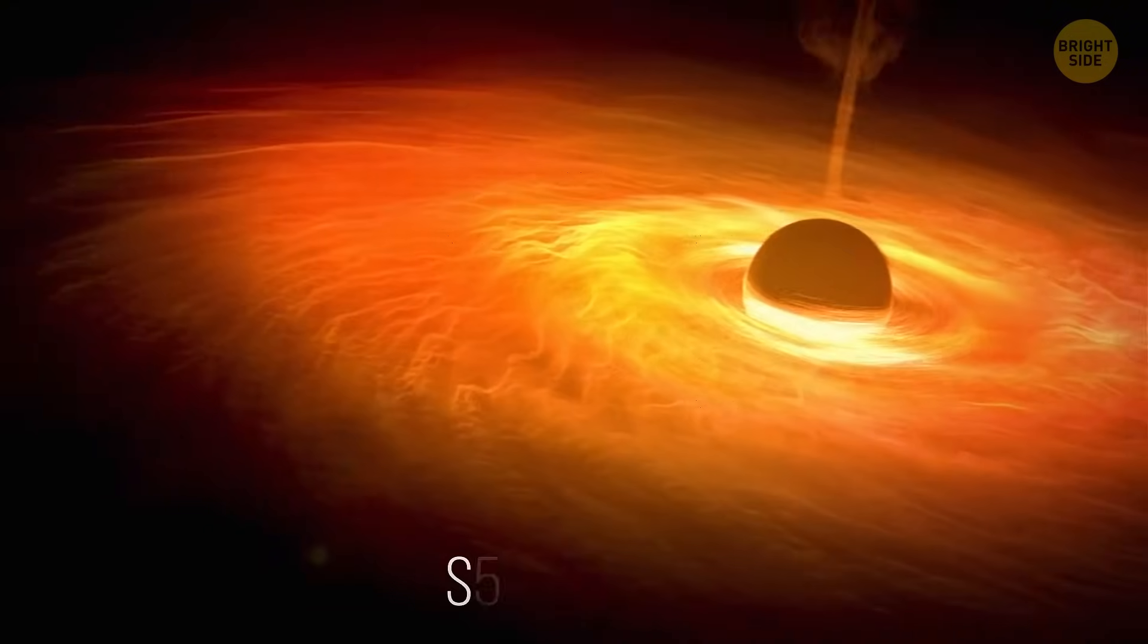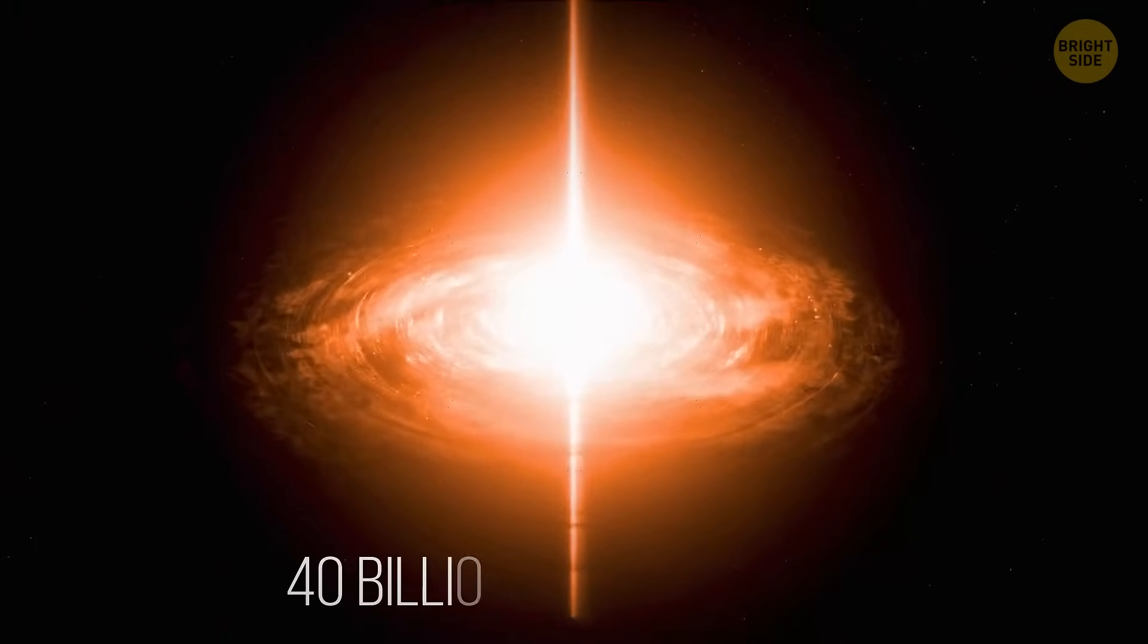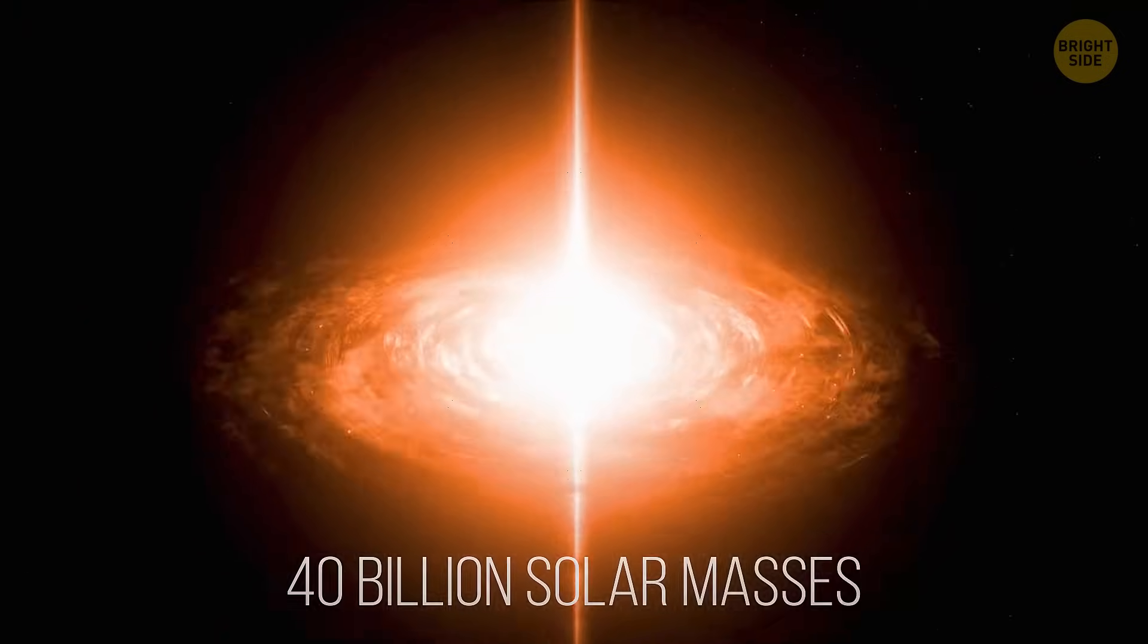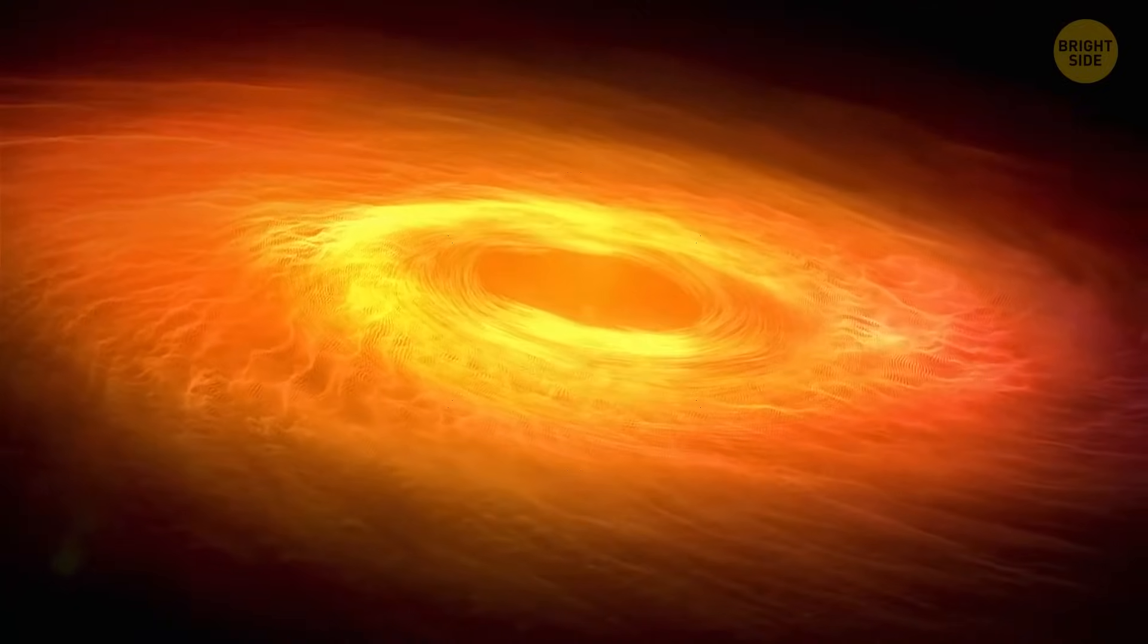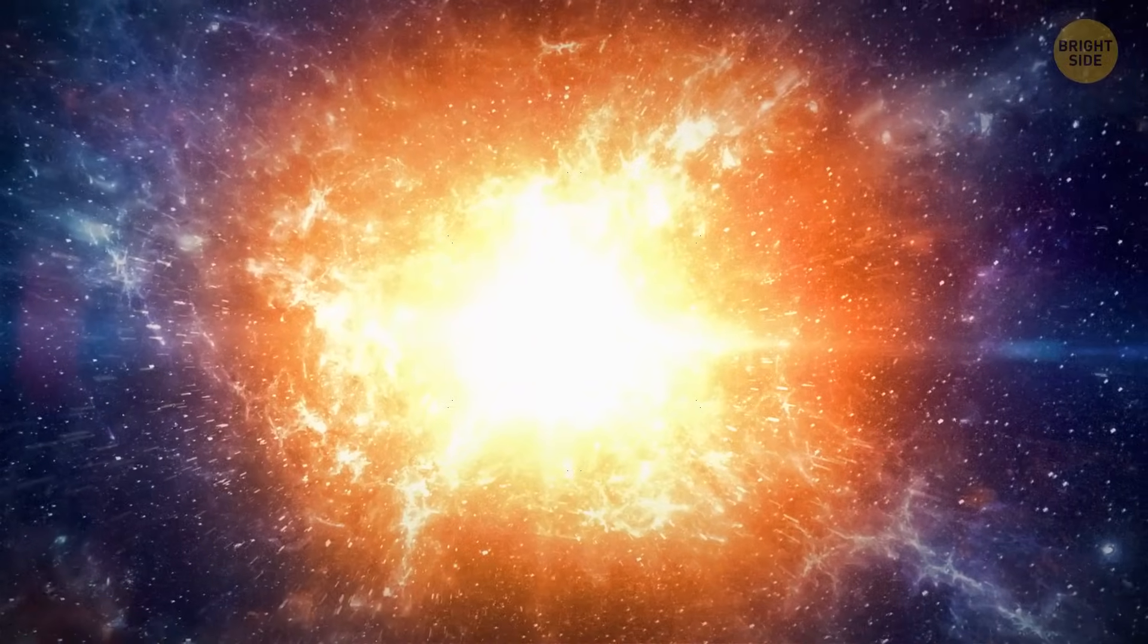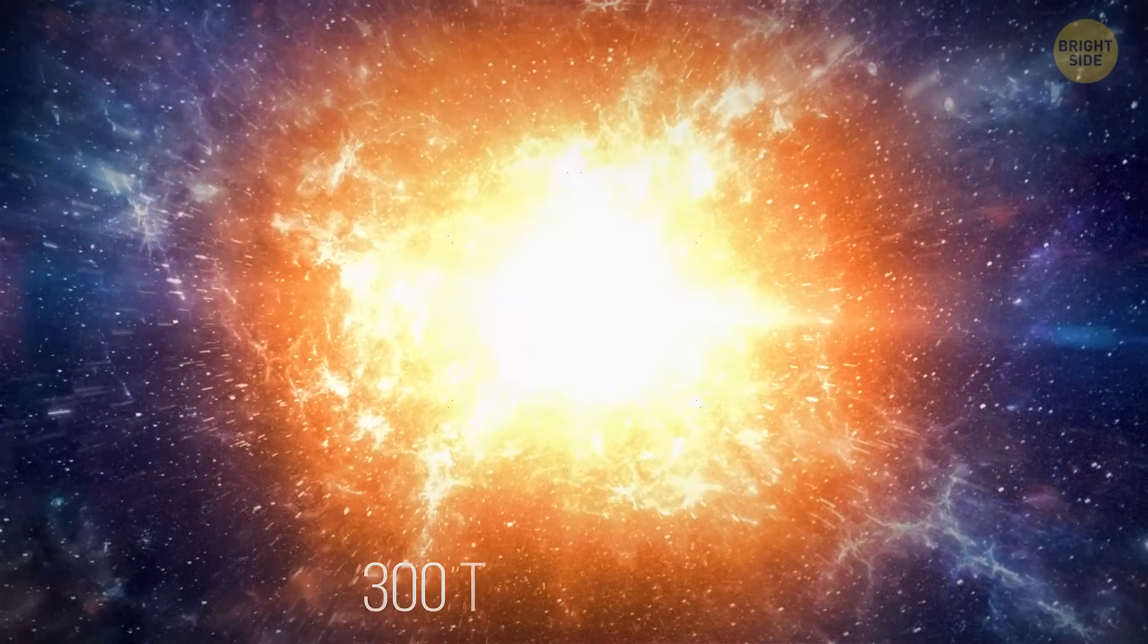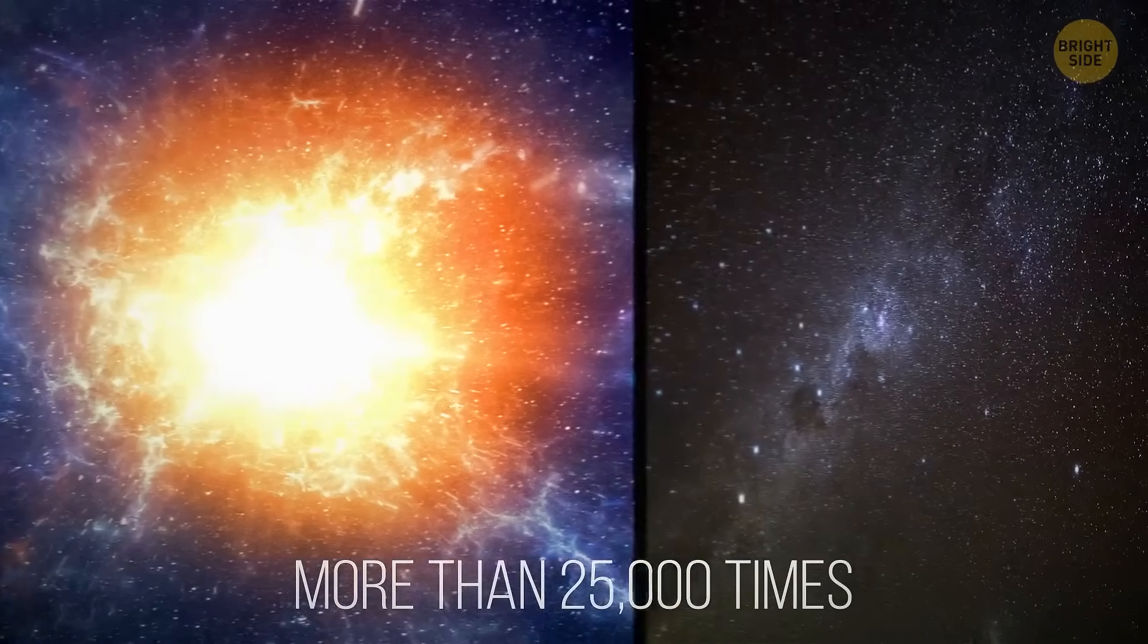The next black hole is one of the most interesting on our list. It has a mass of 40 billion solar masses and is actually a blazar. It's the most energetic of all quasars, super bright distant objects. The blazar's luminosity is 300 trillion times that of the sun and more than 25,000 times as great as the luminosity of all 100 to 400 billion stars of the Milky Way galaxy combined.